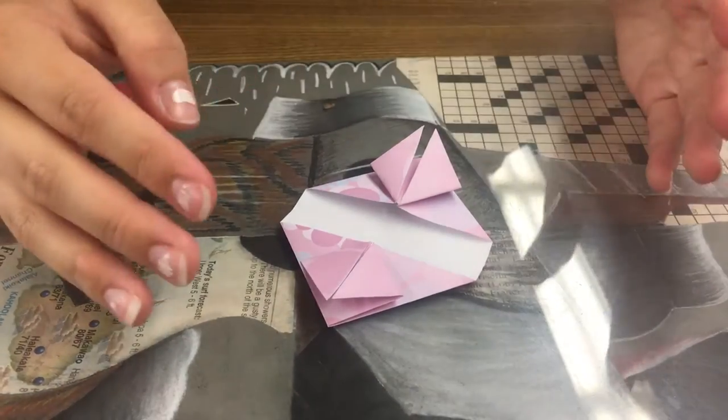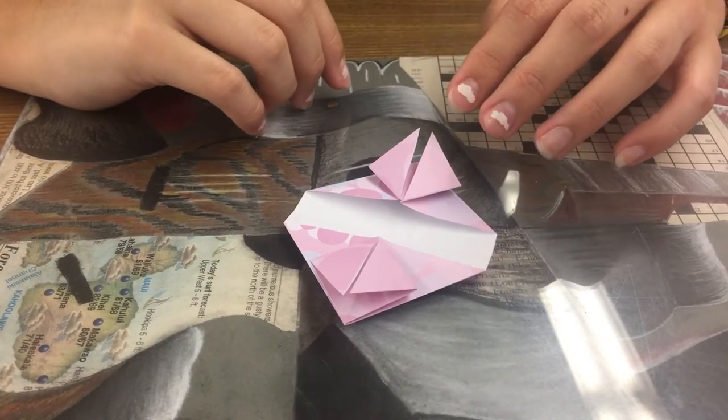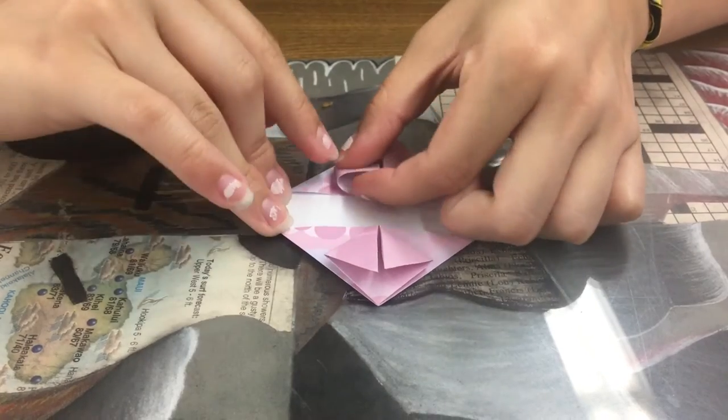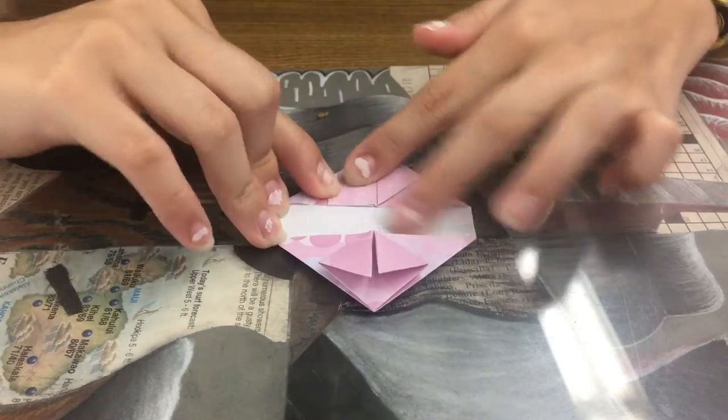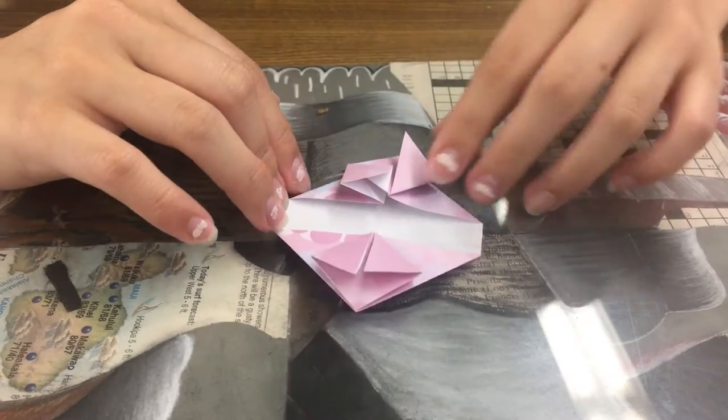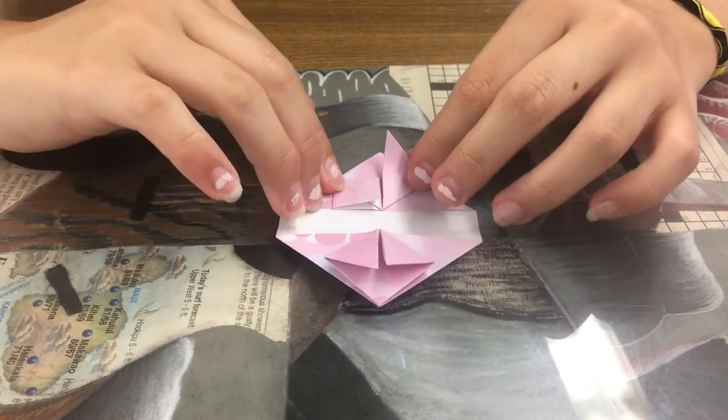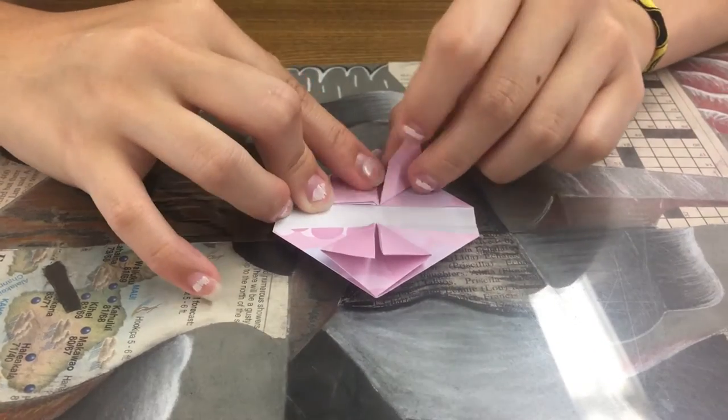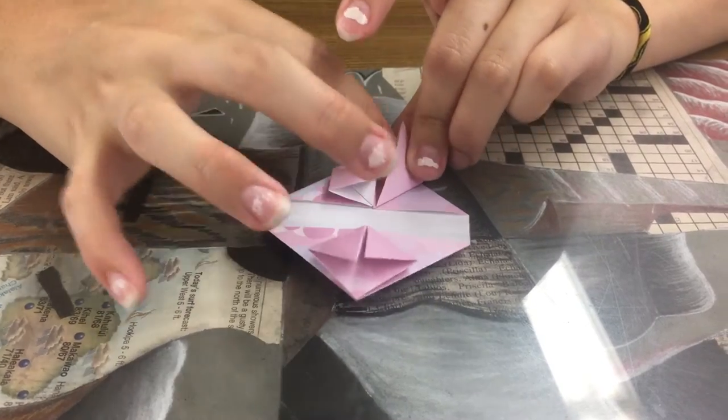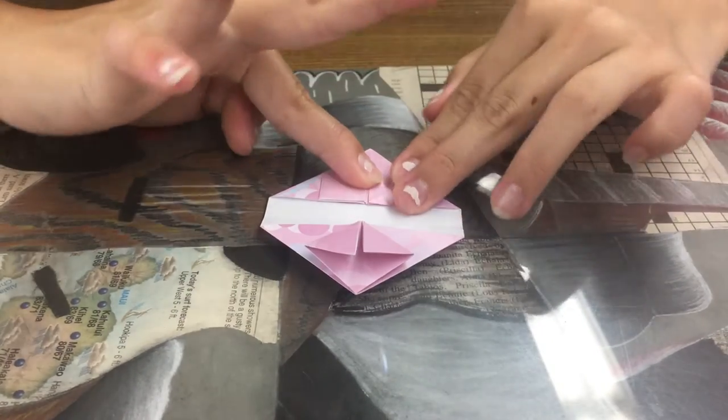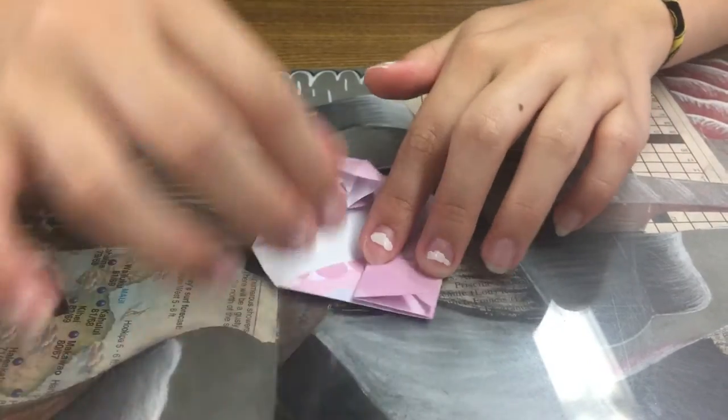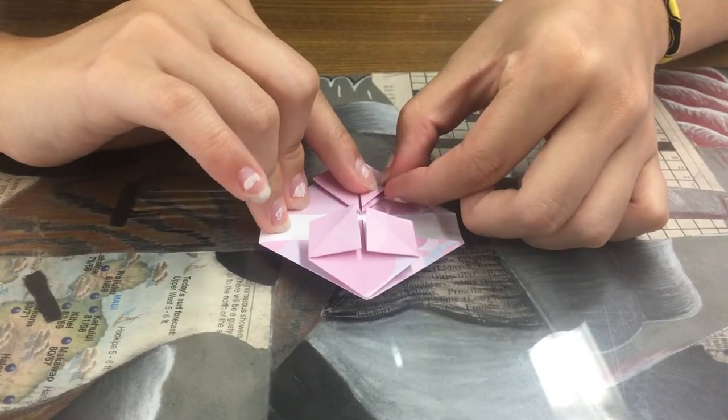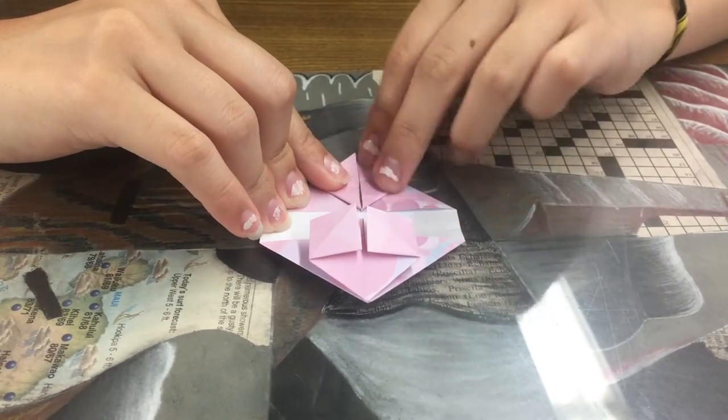And then this next step may differ from person to person. If you're really good at origami you can just open this flap and flatten it to make a square right off the bat. But if you're less experienced at origami you can take this corner, fold it down first to create that crease, and then proceed to open it and flatten into a square.